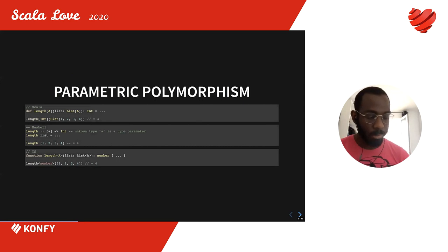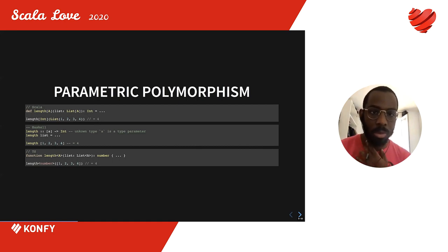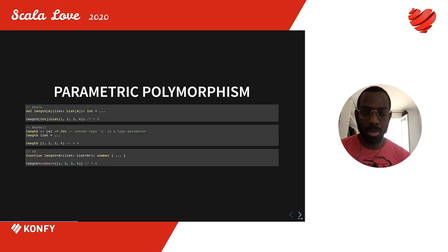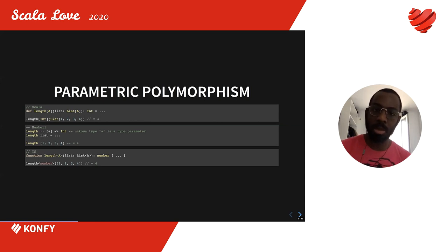I want to give an example of parametric polymorphism. In Scala, I'll define a 'length' function that takes a list and computes its size. That function takes a type parameter 'A', an input of type 'List[A]', and returns an integer. When calling it, I specify the type — for example, A to Int — so the compiler infers the list type. The implementation is agnostic to the type A; it should work for any A.